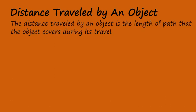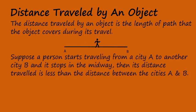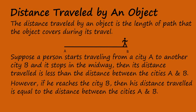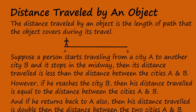Distance travelled by an object. The distance travelled by an object is the length of path that the object covers during its travel. Suppose a person starts travelling from city A to another city B and stops in the midway — then the distance travelled is less than the distance between cities A and B. However, if he reaches back to A, then his distance travelled is equal to the distance between the two cities. And if he returns back to A, then his distance travelled is double the distance between the two cities A and B.